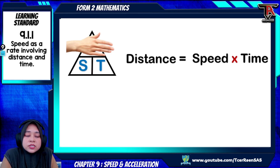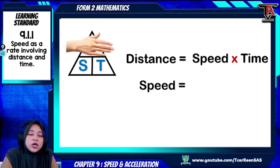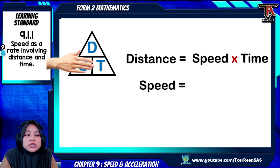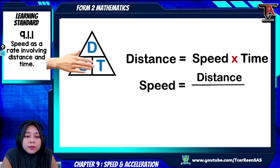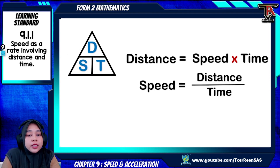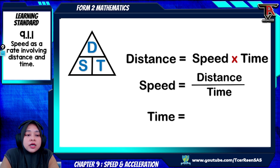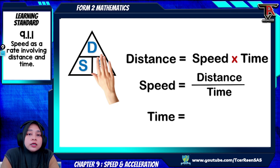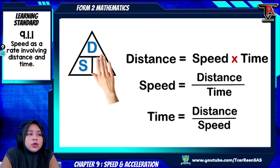If the question asks about time, cover the T in the triangle — what remains is D and S. Since D is on the upper side of the triangle, time equals distance divided by speed. That is all you need to know in this subtopic, learning standard 9.1.1.